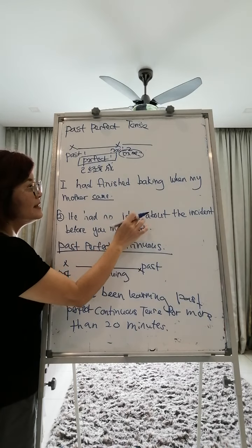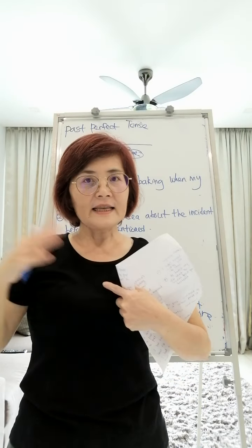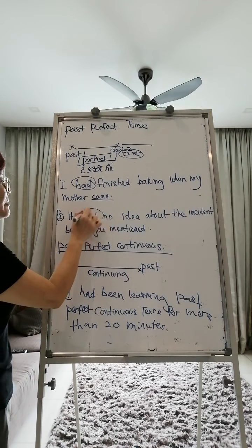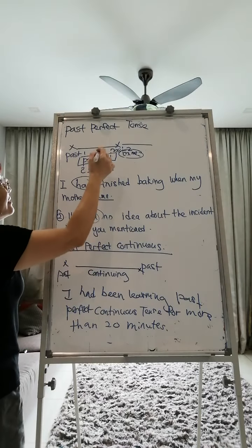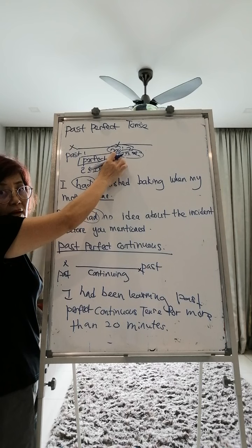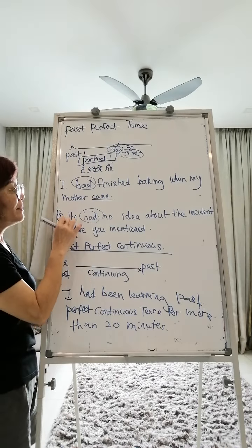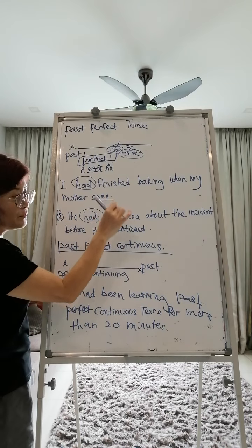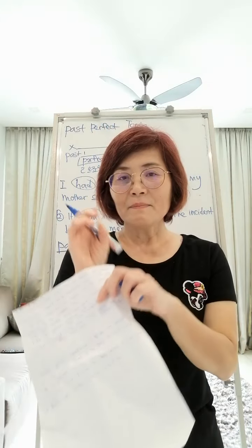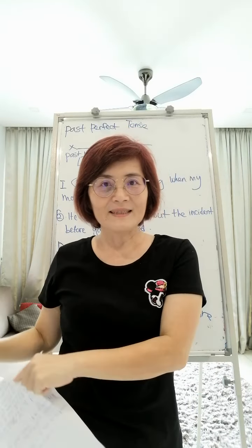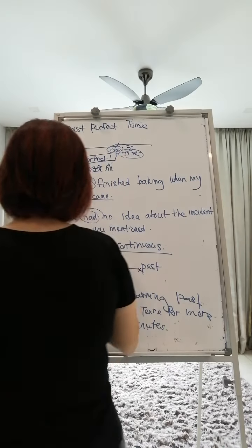Another example: 'He had no idea about the incident.' This means that before you mentioned it, he had no idea about it. The event already happened. So 'he had no idea about the incident before you mentioned it.' With past perfect tense, we put 'had' plus the past participle of the verb.